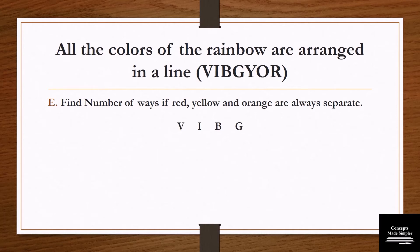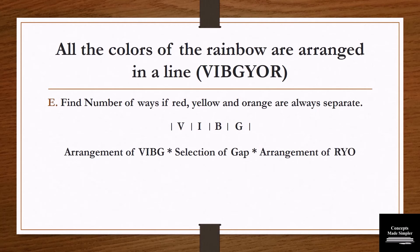So we write V, I, B, and G — giving us 5 gaps. First we arrange V, I, B, G — all other letters. Then from the total number of gaps, we select 3 gaps in which we place our 3 colors, and multiply by the arrangement of those gaps. The final solution is: 4 factorial (arrangement of V, I, B, G) × 5C3 (selection of gaps) × 3 factorial (arrangement of R, Y, O). The final solution is the product of all three.